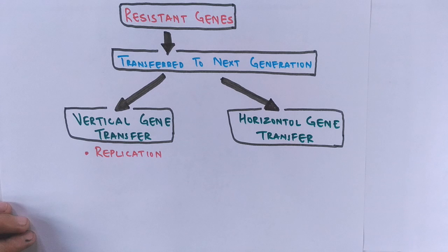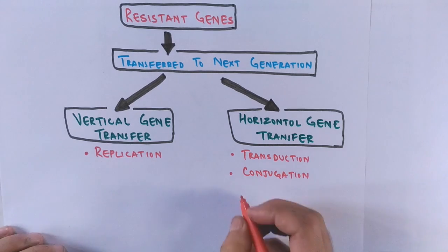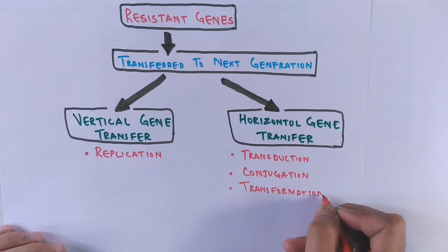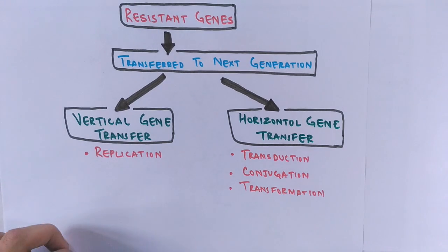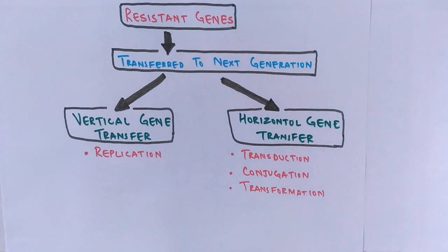In horizontal gene transfer, there are three types: transduction, conjugation, and transformation. In all these processes, mobile genetic elements are involved, which include plasmids, bacteriophages, and transposons.